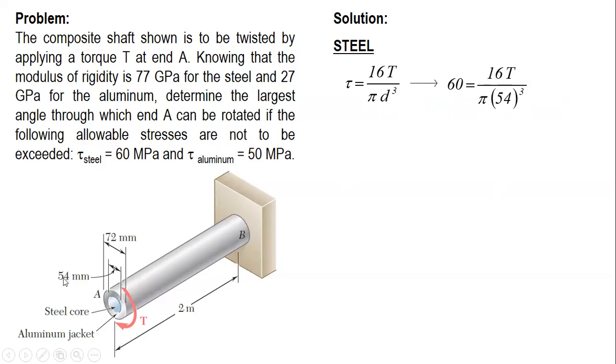The diameter of steel is 54 mm. Megapascal is newton per square millimeter, so the unit of torque is newton-millimeter. After this, we use this value to solve for the angle of twist of end A.